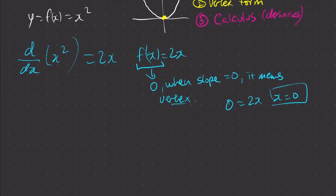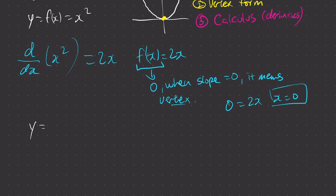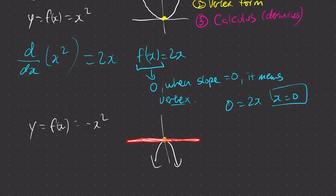Let me give you another example. What if I had y equals f(x) but this time it's equal to negative x squared? If I were to graph this out, it would become like this. Then we can see that there's also a vertex here, but this one is a maximum point.